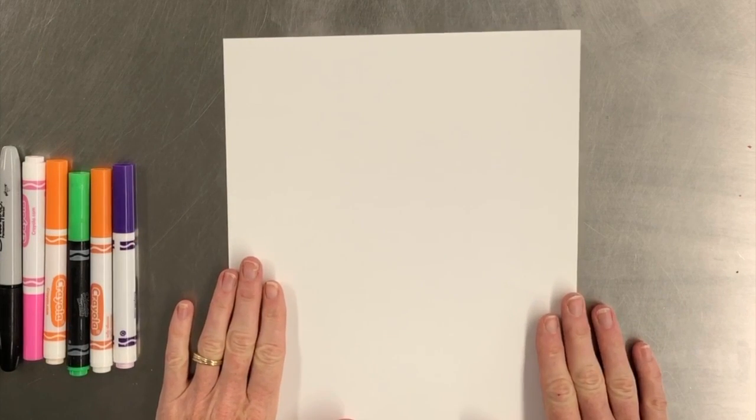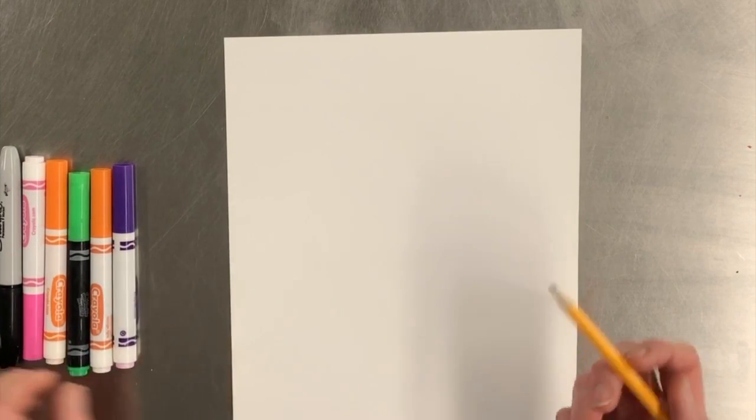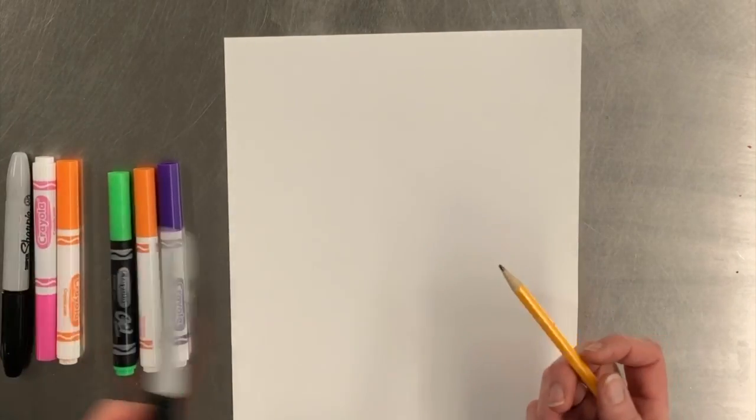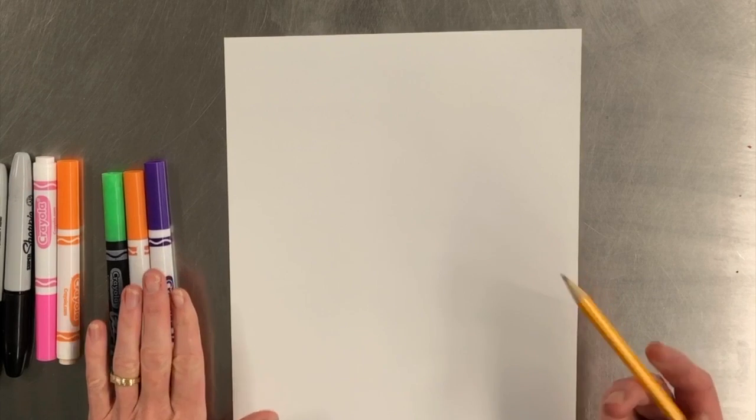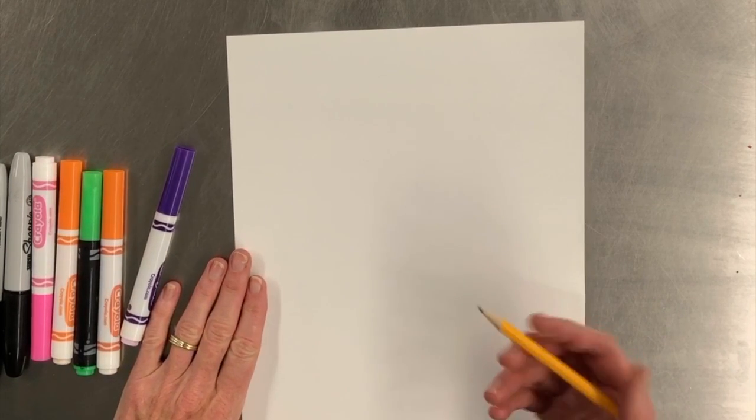I'm actually going to do a football goalpost because my son scored a touchdown yesterday. What you'll need for this part of the project is a Sharpie, a pencil, and markers. For my goal stand, I'm going to start with the base.